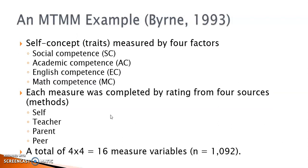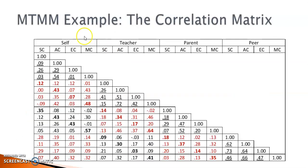The example is a study by Byrne about students' self-concepts in social competence, academic competence, English competence, and math competence. Each of the four traits was measured by ratings from four sources: self, teacher, parent, and peer. Four traits by four methods — that's why there are a total of 16 measured variables. In a correlation matrix, you can get a better idea that the measures of the four traits were gathered from four sources.